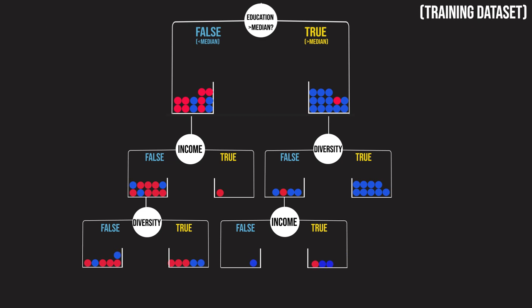Our final tree looks like this, and it has an accuracy of about 80%. This is awesome, considering we only had three variables to work with.